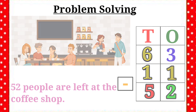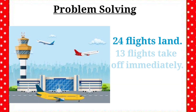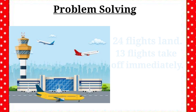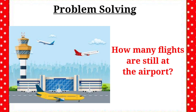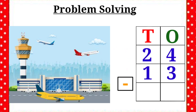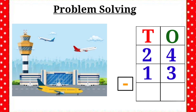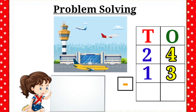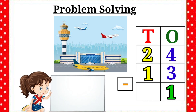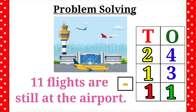Let's see the next example. The question is, how many flights are still at the airport? Here, what will we do? Subtraction. Very good. First, we will write the correct sign and the given numbers. Then subtract the 1's place first. 4 minus 3 is equal to 1. Let's write the number 1 in the 1's place. Then subtract the 10's place. 2 minus 1 is equal to 1. Let's write the number 1 in the 10's place. Therefore, the answer is 11 flights are still at the airport.